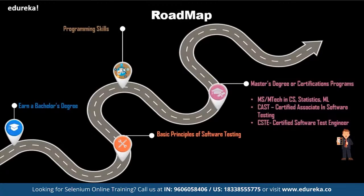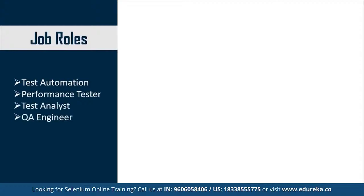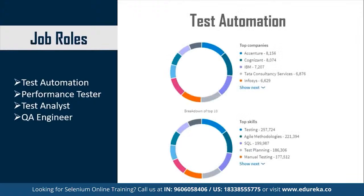Now let's move ahead and have a look at the job roles for a test automation engineer. Some of the most common job profiles include test automation, performance tester, test analyst, and QA engineer. Looking at statistics provided by LinkedIn on these top profiles, the top companies in test automation include big names like Accenture, Cognizant, IBM, TCS, and Infosys.